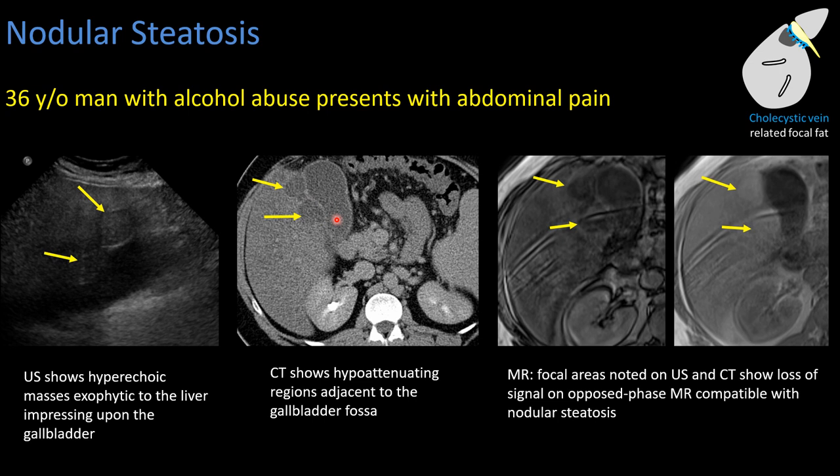While some neoplasms may contain diffuse fat, they are relatively rare. On MRI, these were found to be areas of focal fat deposition along the gallbladder fossa — nodular steatosis. In general, focal fat should not have mass effect and vessels should pass through it, though there are unfortunately exceptions to almost every rule.